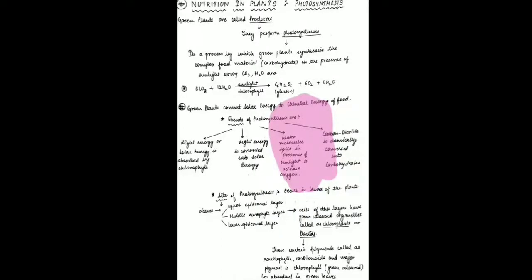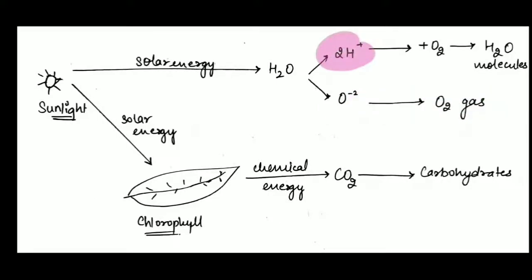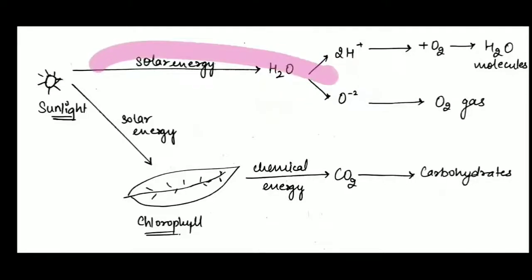Sunlight's first effect on leaves is converting light energy into chemical energy, which converts carbon dioxide into carbohydrates. On the other hand, sunlight also falls on water molecules, causing them to split: hydrogen ions are released separately and oxygen ions are released separately. The oxygen ions join together to form oxygen gas, while hydrogen combines with leftover oxygen to form water molecules. This is how oxygen and water are both released as byproducts of photosynthesis through the splitting of water.